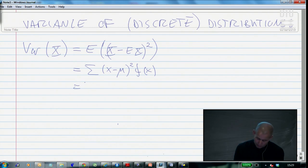If we go to the individual terms of this square of two things, the difference of two numbers: x squared plus mu squared minus two mu x, multiplied by f of x.